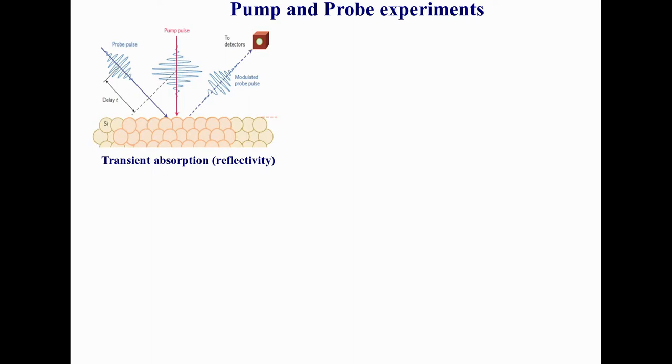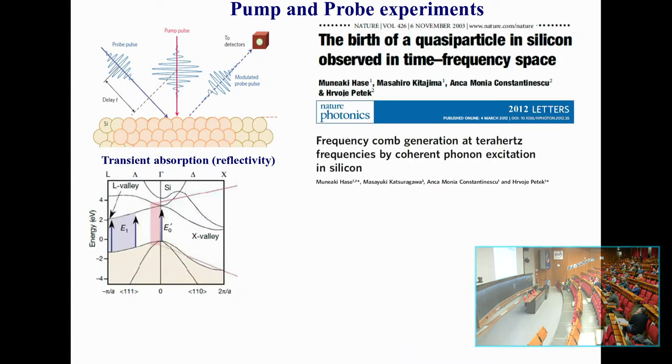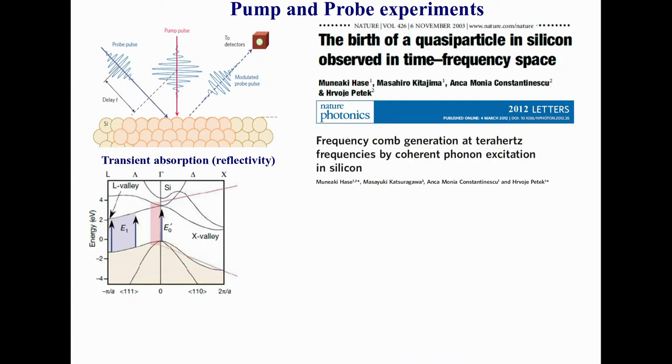Another kind of experiment, similar in spirit. There is again a pump pulse sent to the material, and with a given time delay, a probe. But this time, instead of photo-emitting an electron, what is detected is the reflection of the probe signal. This is an experiment which has been done, for example, in these two papers. Again, bulk silicon pumping near the optical gap.